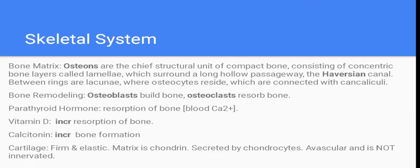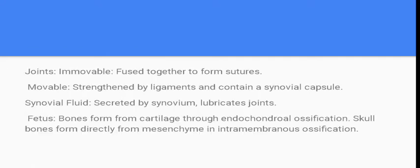Cartilage is firm and elastic. It's secreted by chondrocytes. It's also avascular and not innervated — worth noting because most other tissues are. Joints: immovable joints are fused together, while movable joints are strengthened by ligaments and contain a capsule. There is a fluid called synovial fluid that lubricates the joints so they don't grind on each other.